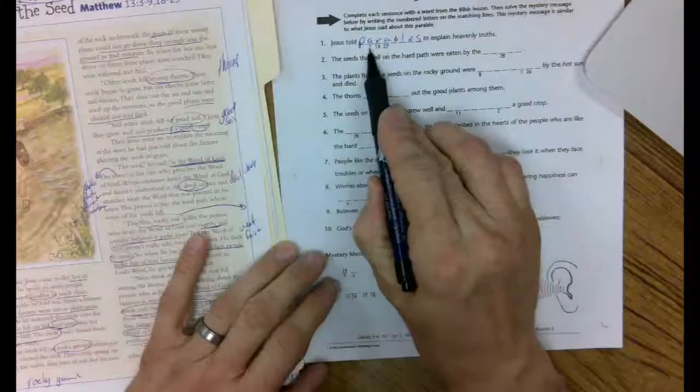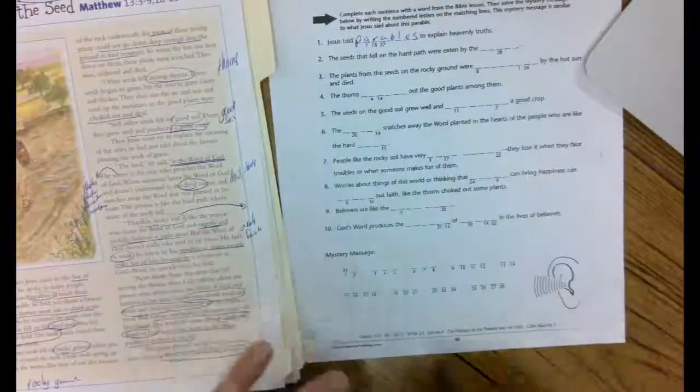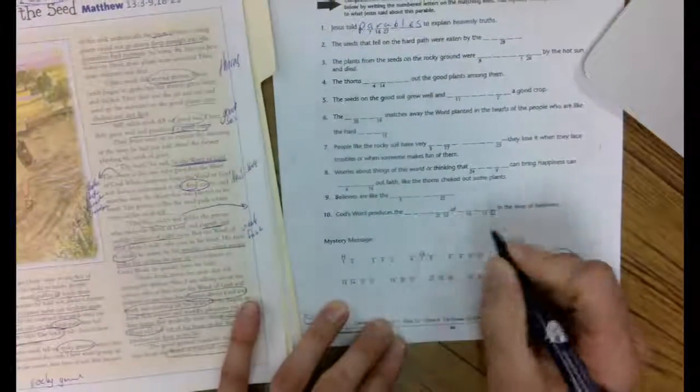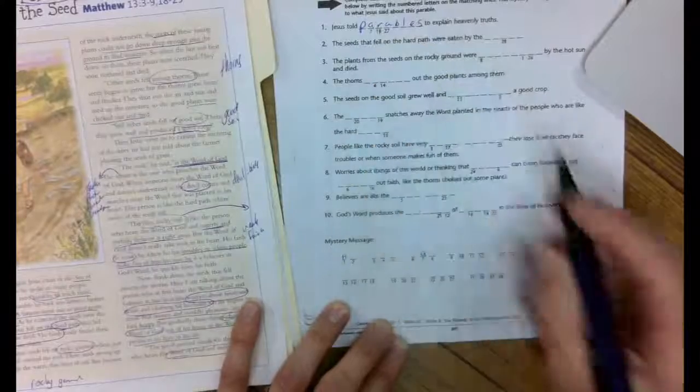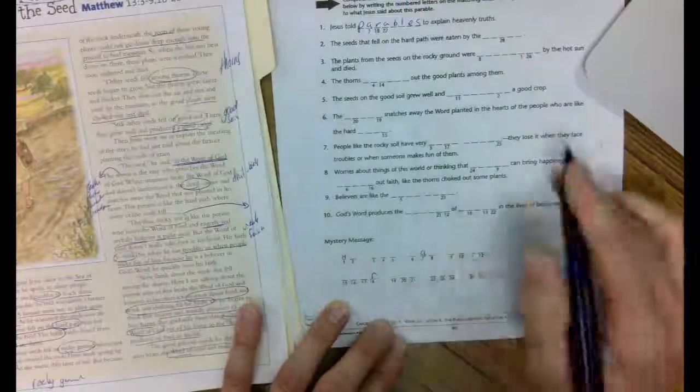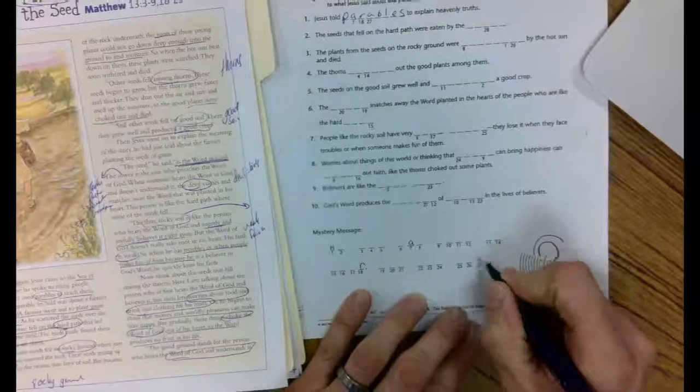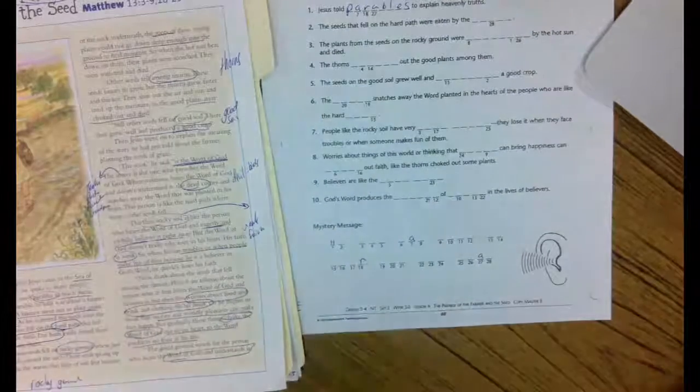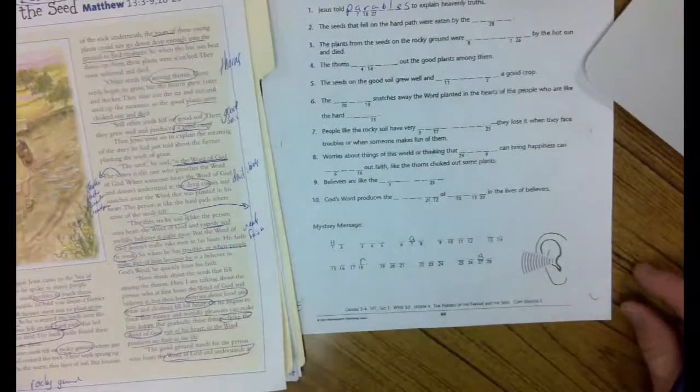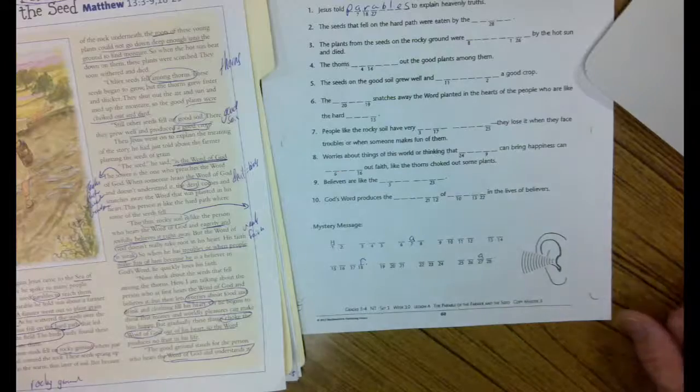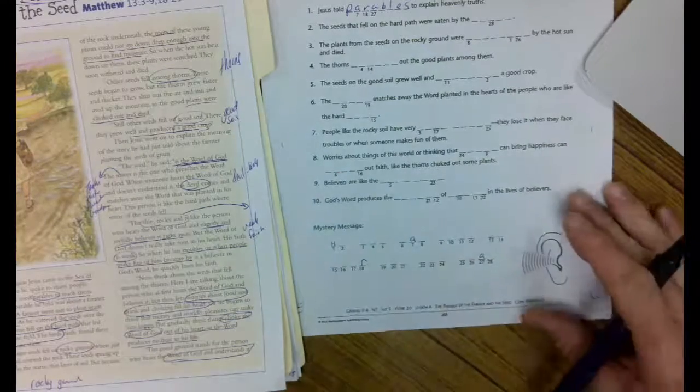Now I'm going to use these letters down here. Number seven is an A. So now I come to the bottom. Seven is an A. Eighteen is an R, and 27 is an A. All right, so it's like playing Wheel of Fortune. You're trying to figure out the missing letters to figure out the hidden word.